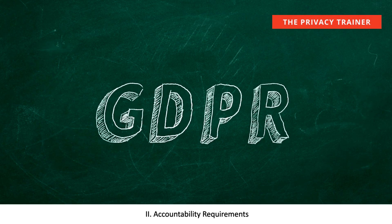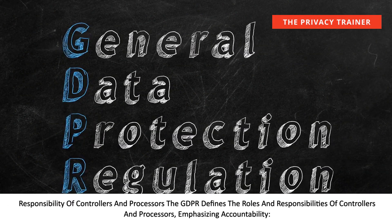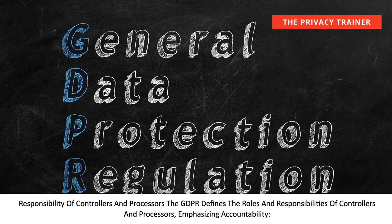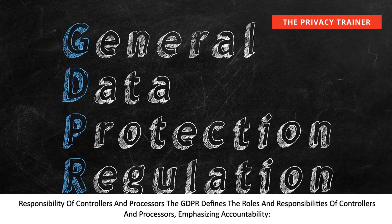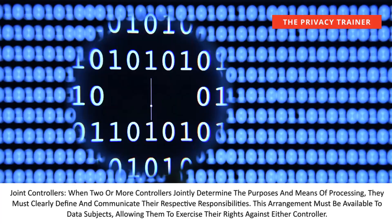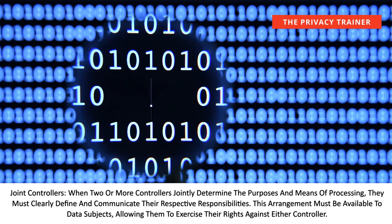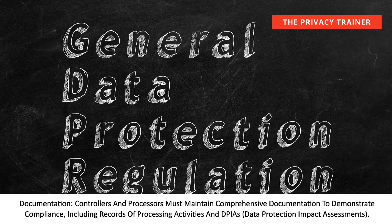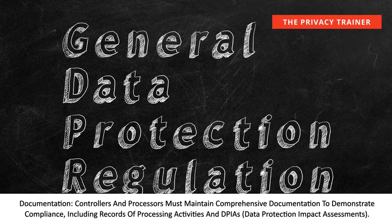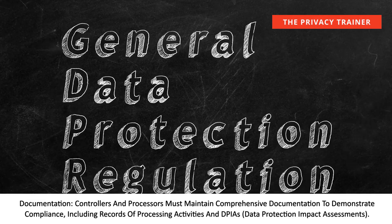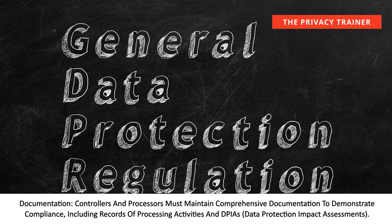The GDPR defines the roles and responsibilities of controllers and processors, emphasizing accountability. When two or more controllers jointly determine the purposes and means of processing, they must clearly define and communicate their respective responsibilities. This arrangement must be available to data subjects, allowing them to exercise their rights against either controller. Controllers and processors must maintain comprehensive documentation to demonstrate compliance, including records of processing activities and Data Protection Impact Assessments (DPIAs).